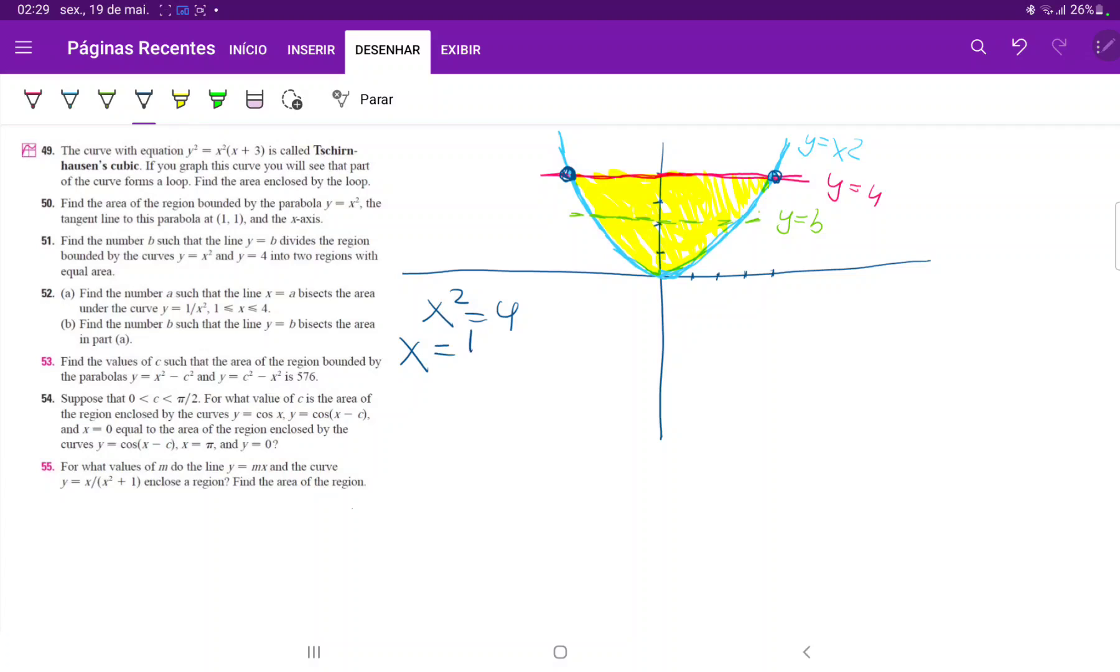So we're going to set up our integral. It goes from negative 2 to positive 2 of the upper curve is 4 minus x squared times dx. When we integrate this, this is 4x minus x cubed over 3, and that is from negative 2 to 2. When we input these boundaries, this is 8 minus 8 thirds, and then minus minus, so plus 8.